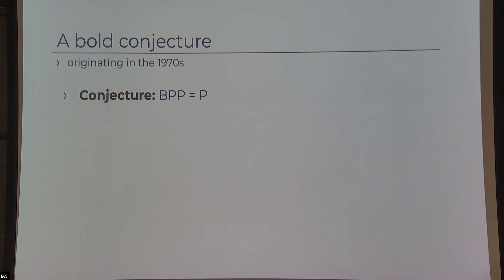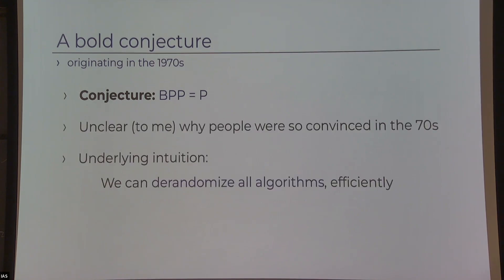This was raised about 50 years ago. As I've been told, people were very convinced. The underlying intuition was that every probabilistic algorithm can be de-randomized if you try to be clever enough. Whichever probabilistic algorithm you give me, you can eliminate the random choices — these are just tricks you can work around.